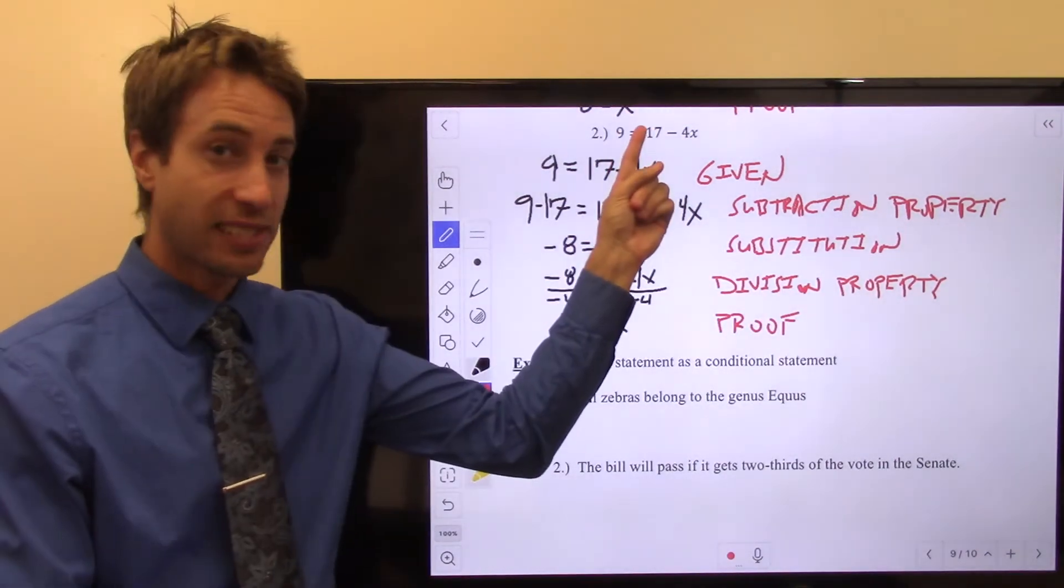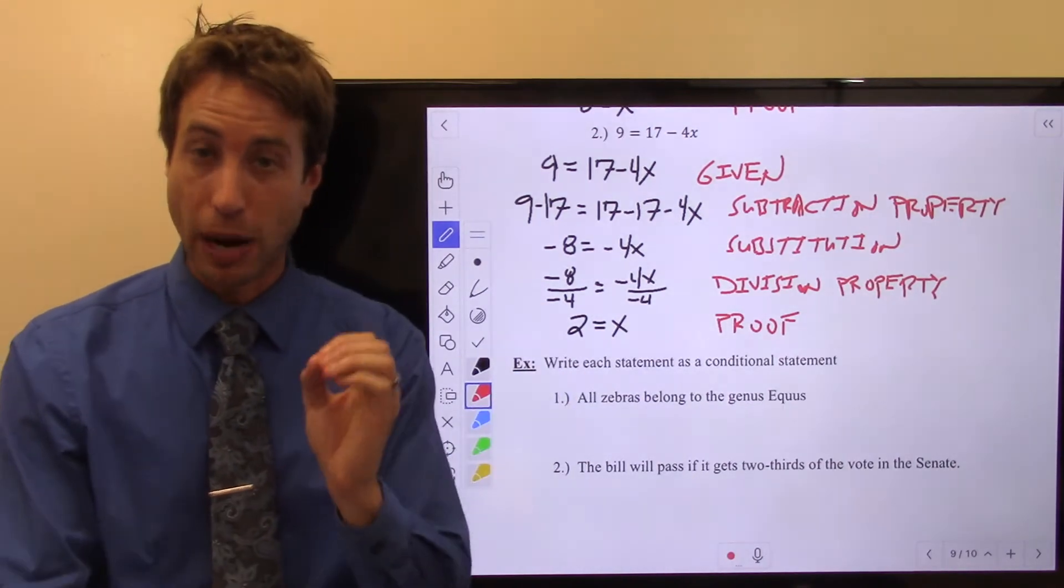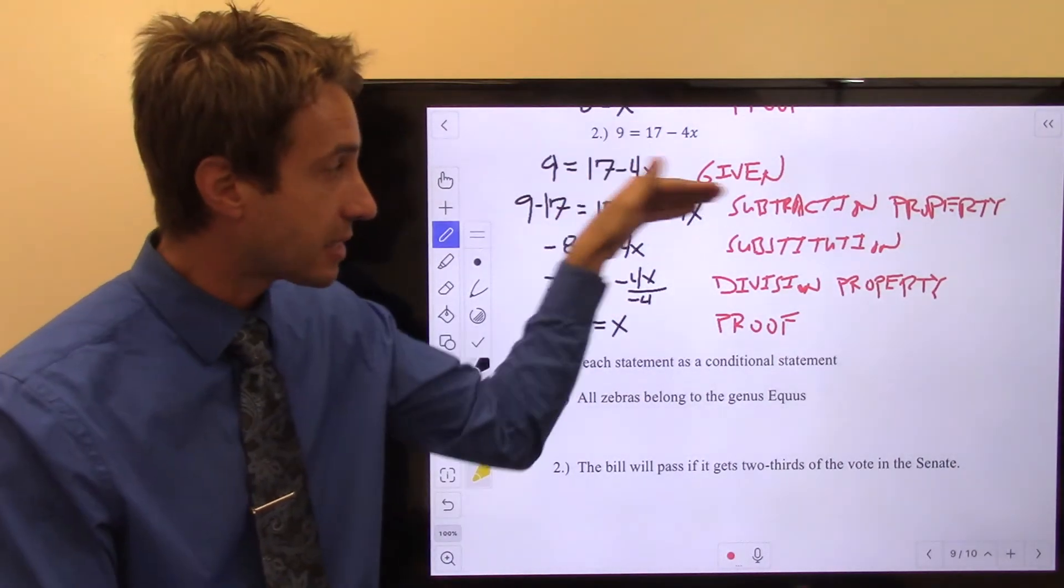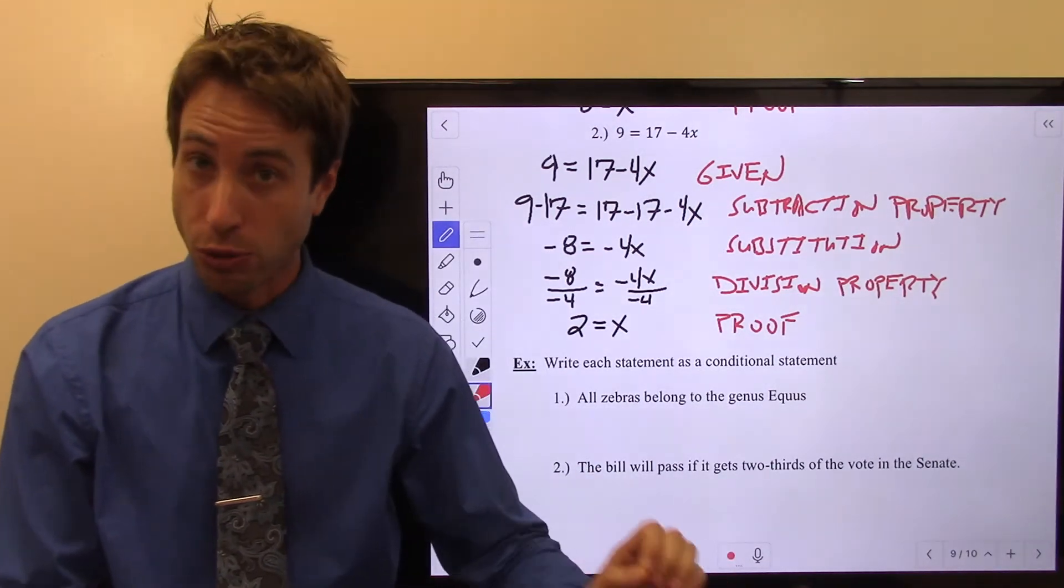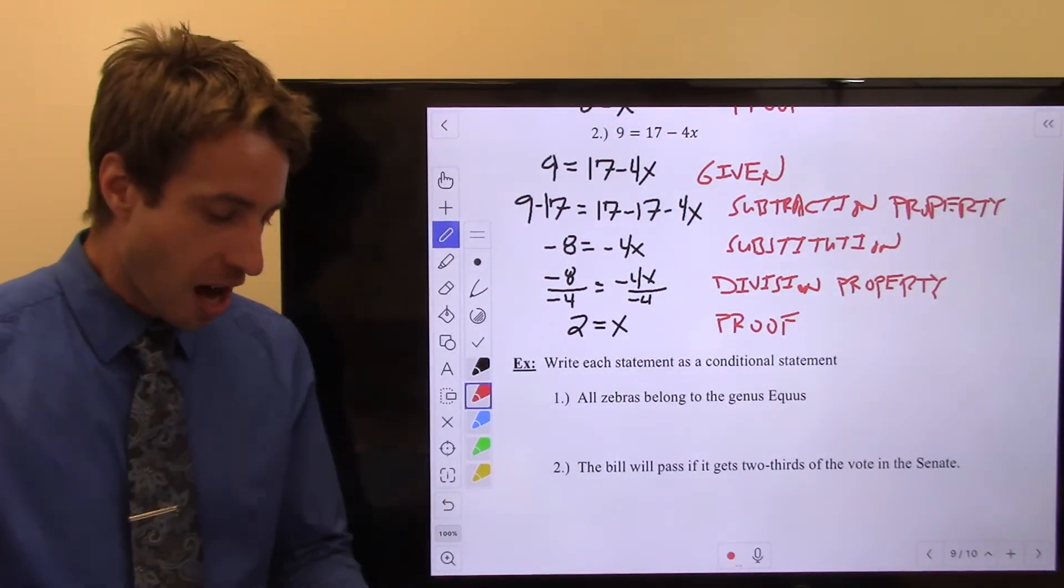Again, I know given this statement that x is equal to 2, right? By deductive reasoning. Every step I've given, my justification is true. Therefore, my conclusion must also be true. All right? A little bit more practice. Writing conditional statements.